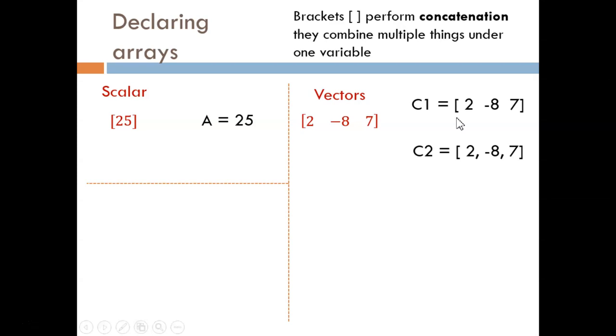To create this first row vector, we start with the assignment operator like usual. Then, within brackets, we list out all the values we want to combine in order. We can use either spaces or commas between values. Both of these fill in values left to right.